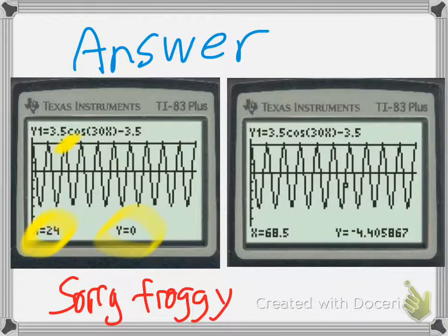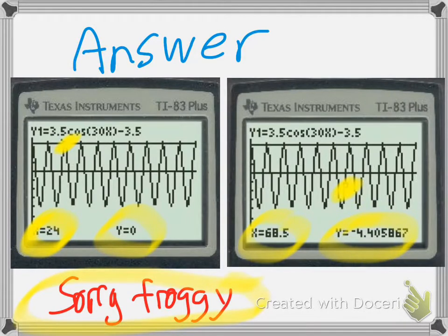51.5 from the other side, we have to take 120 minus that. And we got 68.5 feet from the start. Okay, unfortunately, Froggy is down negative 4.4 feet. So Froggy broke. So sorry. Thanks for watching.